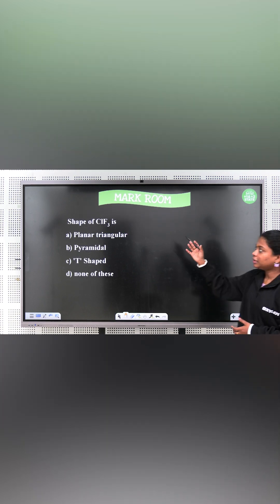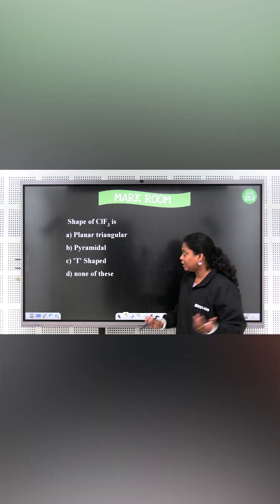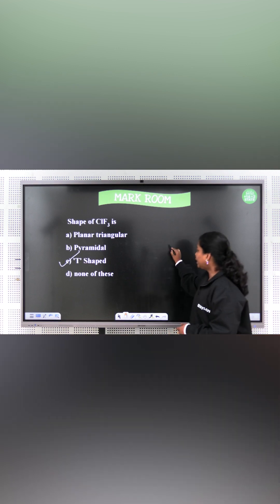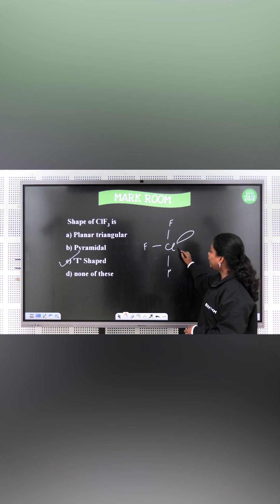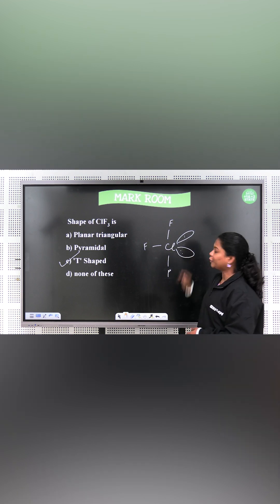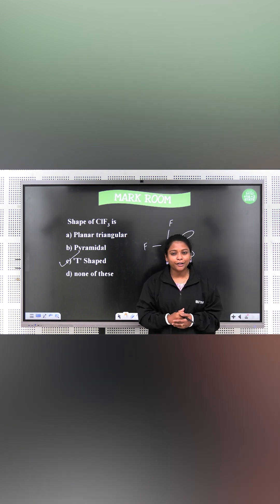Okay, next question. The shape of ClF3 molecule is T-shaped. Correct? So chlorine and then here is fluorine, fluorine, fluorine. So here we have two lone pairs. Okay, so this is our mock room question. Next mock room, we will meet in the next room. Thank you.